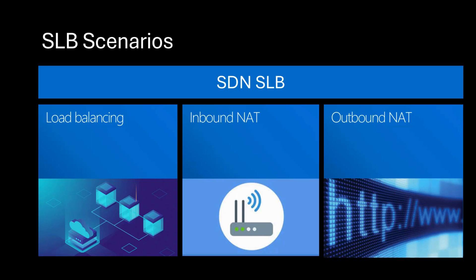Inbound NAT is used for port forwarding and it involves translating an external public IP address and port to an internal private IP address and port. Inbound NAT lets you connect to VMs by using the load balancer front-end IP address and port number — the load balancer receives traffic on a port and based on the inbound NAT rule it forwards the traffic to a designated VM on a specific backend port. For example, if I have a web server within my private network and I want users on the internet to access it, I would configure inbound NAT to map a specific public IP and port to the internal IP and port of the web server. External users can then reach the web server even though it has a private IP and is not directly exposed to the internet.